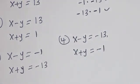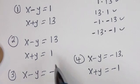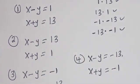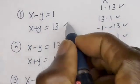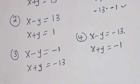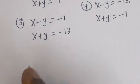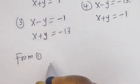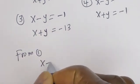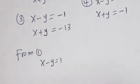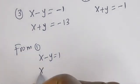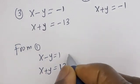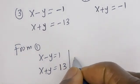These are simultaneous equations which can be solved using the elimination method. Now let's solve the first case. From the first case, we have x minus y is equal to 1, and x plus y is equal to 13. Let's add the two equations together.